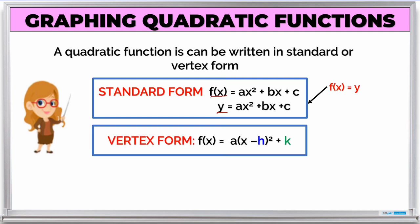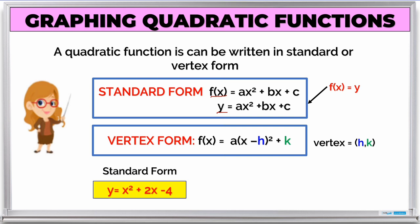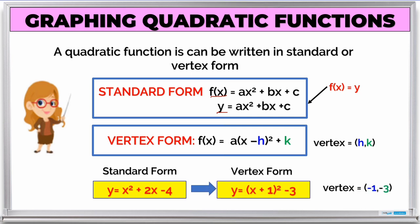Another is the vertex form. The vertex form is written as f(x) = a(x - h)² + k, where the vertex is equal to (h, k). For example, y = x² + 2x - 4 is written in standard form. When we transform it into vertex form, it will become y = (x + 1)² - 3. The vertex here is (-1, -3).